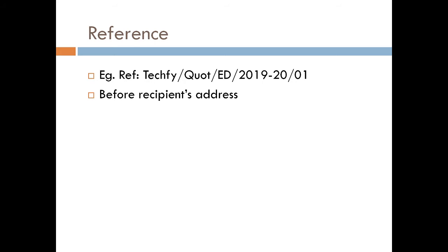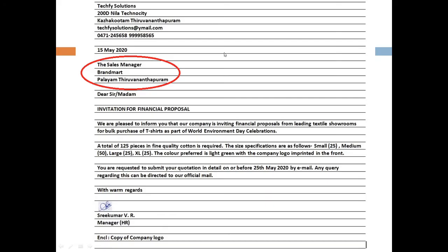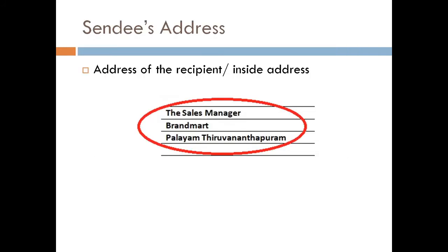The reference line refers to a particular file number or a certain code, and it helps in locating previous correspondence regarding that file. After leaving a line space, you can add the address of the recipient, also referred to as the inside address.